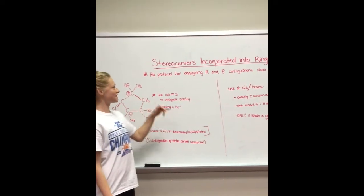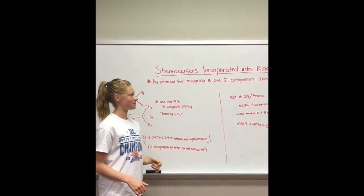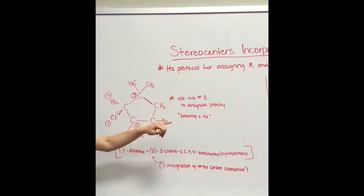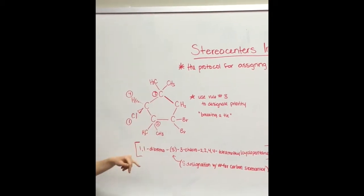When naming stereocenters incorporated into rings, the protocol for assigning R and S configurations does not change. You use rule number three to designate priority when breaking a tie and it's connected to multiple carbons in the ring.